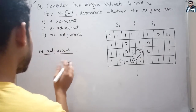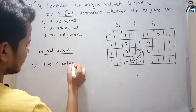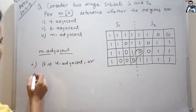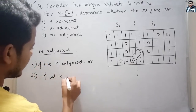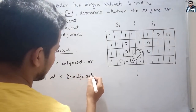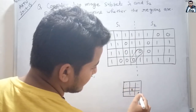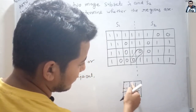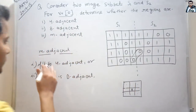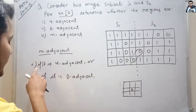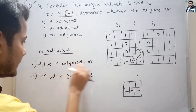To find M-adjacent: we call 2 pixels M-adjacent if they are 4-adjacent, or if they are not 4-adjacent but are diagonally adjacent (D-adjacent). The diagonal adjacent pixels are these four diagonal positions. These four are 4-adjacent, these four are diagonally adjacent, and all eight together are 8-adjacent. When a pixel is 4-adjacent, it is also M-adjacent.